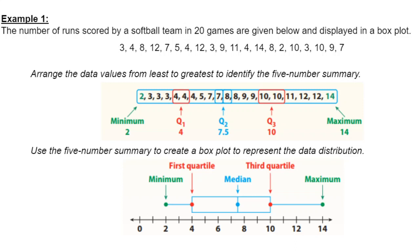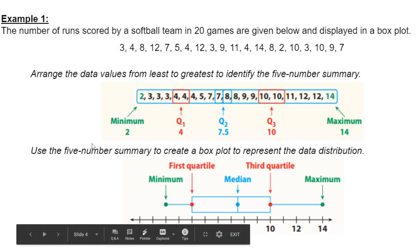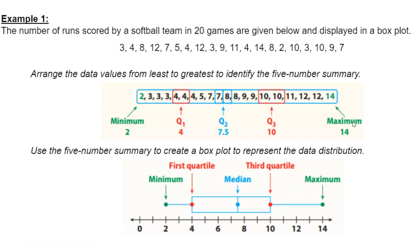Our first example we have here, we have the number of runs scored by a softball team in 20 games. So this is an even set of data. Your data is given to you randomly. Sometimes it's given to you in order from least to greatest. The only way we can really find a box plot or create a box plot is by putting our numbers from least to greatest. For our minimum and our maximum, pretty straightforward - the smallest number and the biggest number.